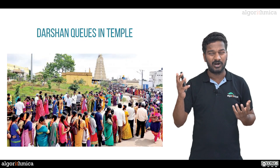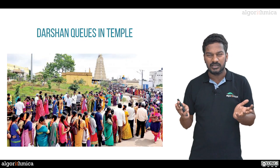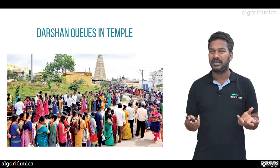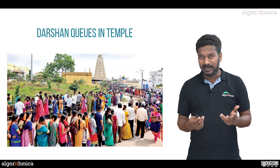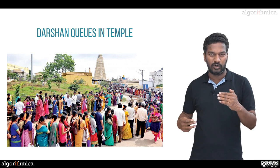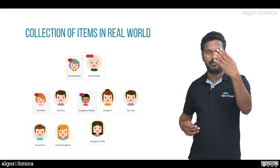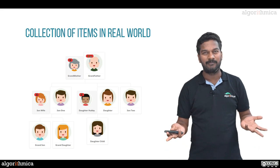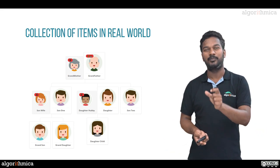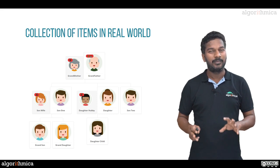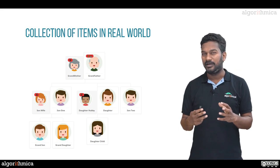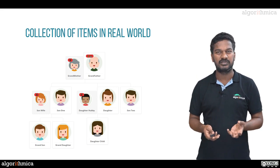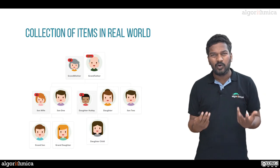If you go to a temple you observe lots of people waiting in queues — that is a collection of people waiting for darshan. Another example: many people are interested in their family hierarchy — parents, their parents, their parents' parents — going all the way up to the top level. That whole structure is also a collection. Collections appear everywhere in real life.